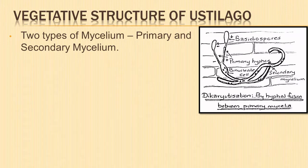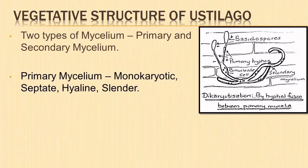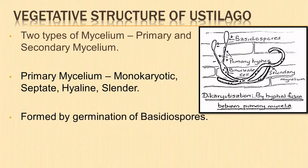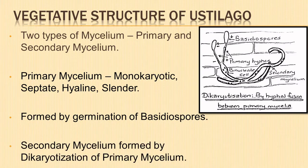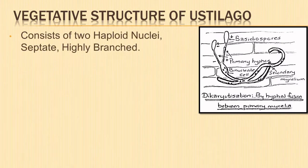Let us look into the vegetative structure of Eustilago. The mycelium is of two types: primary mycelium and secondary mycelium. The primary mycelium is monokaryotic, with a single haploid nucleus in each cell. The mycelium is septate, hyaline, and slender. It is formed by the germination of basidiospores and is of very short duration.